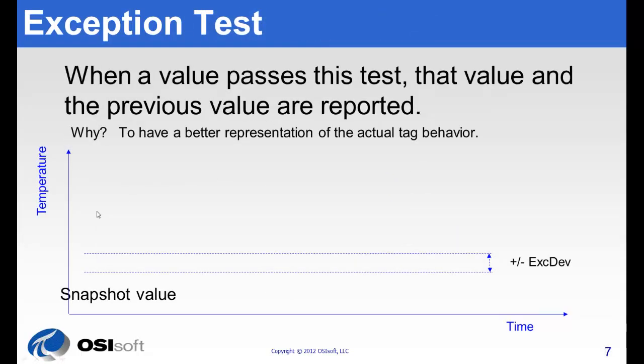Now let's have a quick look at how this works. We have a starting value right here, and we call this the snapshot value. This is the current value that has been sent to the PI server. It defines the current state of our process.